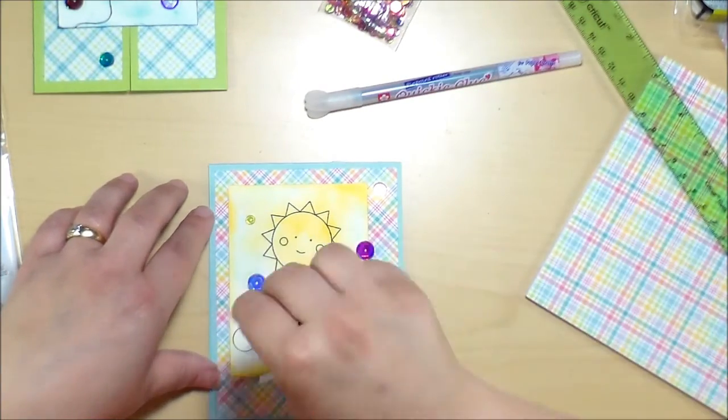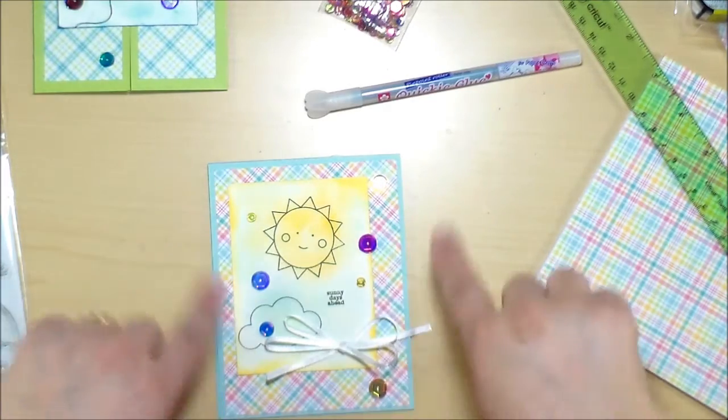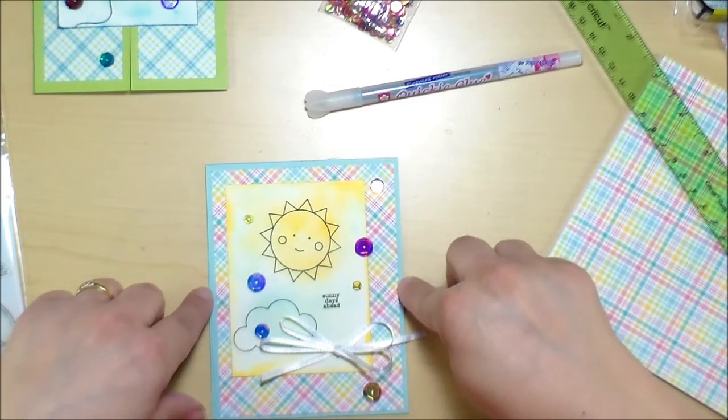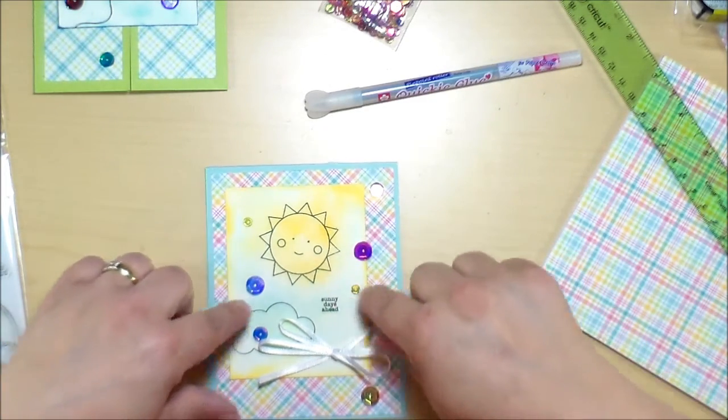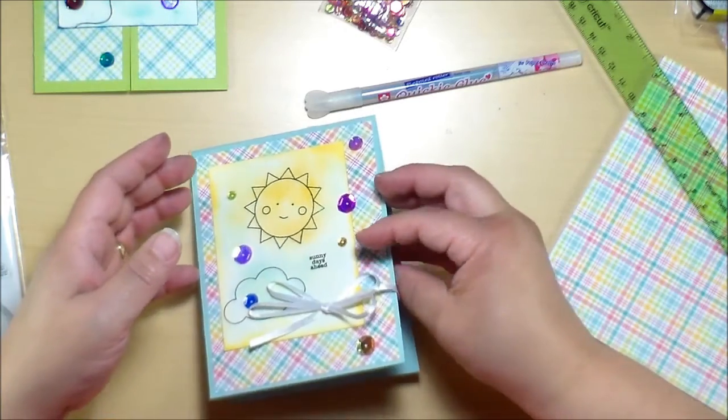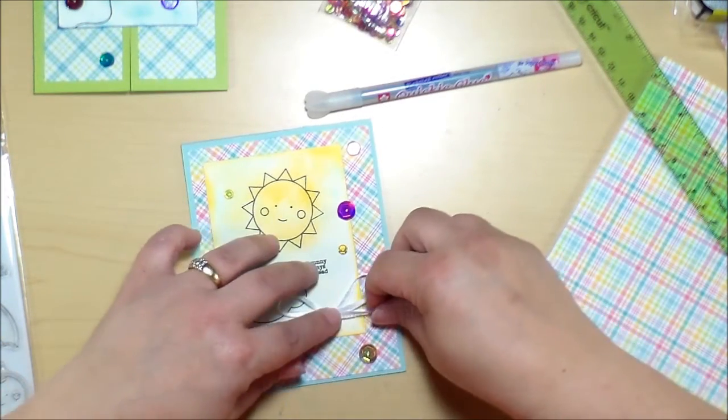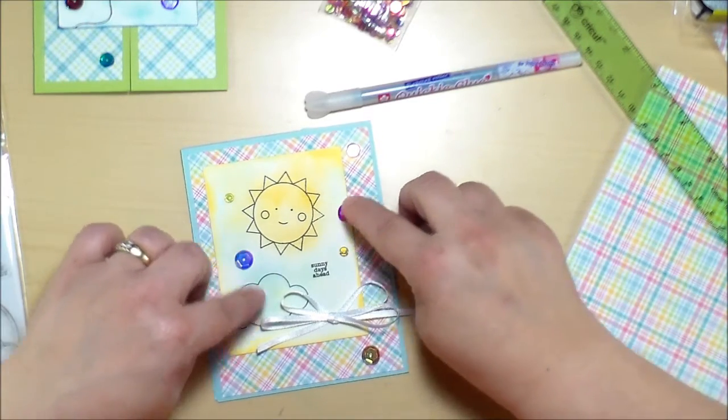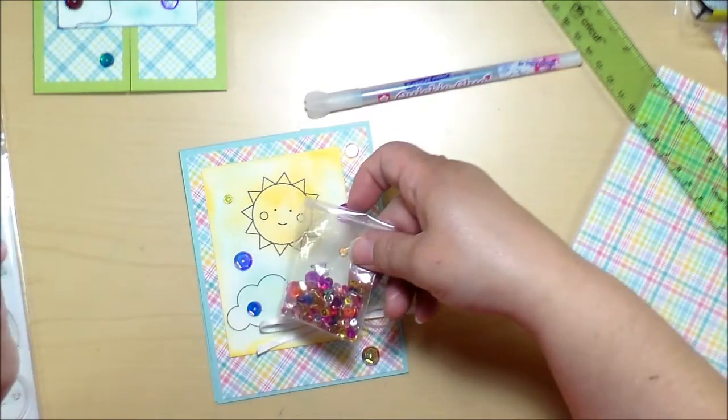And then again with that Bahama Blue, I just swirled on a little bit of blue in the rest of the sky area. Then I stamped on the cloud, the sun, and the sunny days ahead sentiment. And adhered everything except for the sequins with double-sided tape. And then I made a little bow with my Ultimate Tool Kit and just adhered it with a glue dot. And then with the glue dots, I adhered some more sequins that came with the kit.